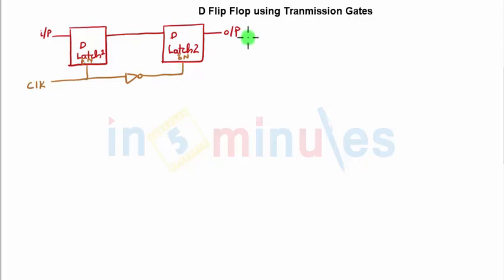In simple words, suppose this is my clock waveform being drawn. Then latch 1 would be functioning here and latch 2 would be functioning here. Similarly, latch 2 won't be functioning here and latch 1 won't be functioning here. This is the concept we need to keep in mind.